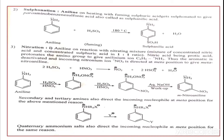For nitration, we use concentrated HNO3 and concentrated H2SO4, which generates the nitronium ion NO2+. Aniline reacts with the nitrating mixture — a 1:1 ratio of concentrated nitric acid and concentrated sulfuric acid. The nitric acid, being a protic acid, protonates the amino group to give the anilium ion C6H5NH3+. The aromatic ring is deactivated, and the incoming nitronium ion NO2+ is directed to the meta position to give meta-nitroaniline.